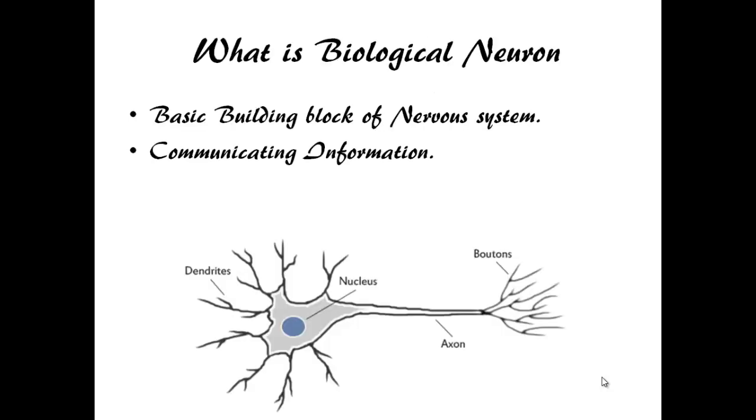What is a Neuron? A neuron is a nerve cell, a basic building block of nervous system. These specialized nerve cells are responsible for communicating information, transmitting and receiving the information. Each part of neuron plays a role in the communication of information throughout the body.